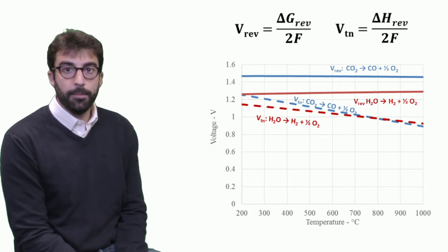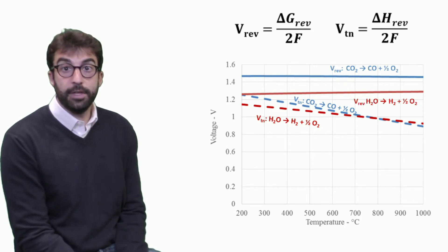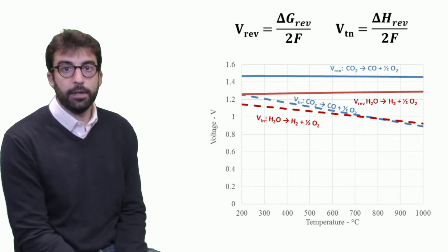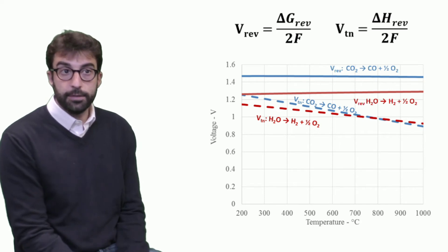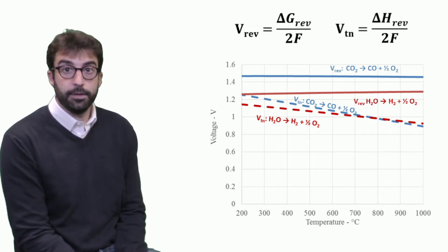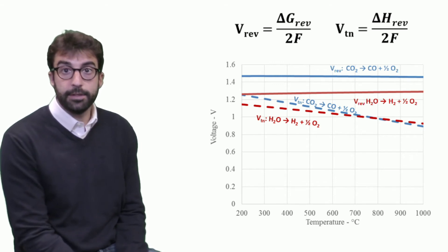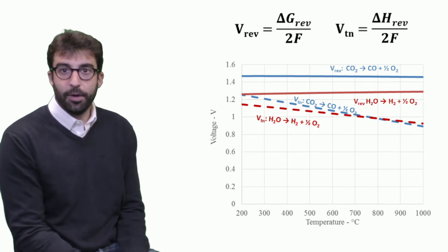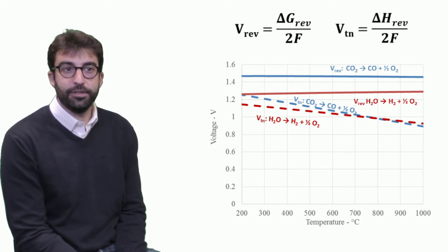We can carry out the same analysis by considering the reversible voltage and the thermoneutral voltage, as we did for simple steam electrolysis. The reversible voltage is higher for carbon dioxide decomposition compared to steam electrolysis. However, the thermoneutral condition tends to converge to a value close to one volt in the 700–800 degrees Celsius range. This means that within these operating conditions, we can decompose both steam and carbon dioxide simultaneously, resulting in what is called co-electrolysis.